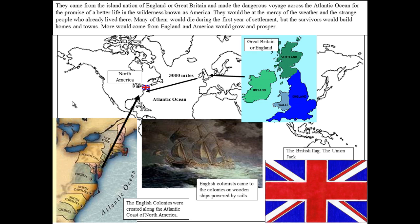They came from the island nation of England or Great Britain and made the dangerous voyage across the Atlantic Ocean for the promise of a better life in the wilderness known as America. They'd be at the mercy of the weather and the strange people who already lived here. Many of them would die in the first year of settlement, but the survivors would build homes and towns. More would come from England and America would grow and prosper. It's 3,000 miles from England to North America across the Atlantic Ocean, which is very rough and cold. But people were willing to brave all of the risks because they were promised a better life, freedom, and work — basically survival if they could make it to North America and succeed at living through all of the challenges of this new place.